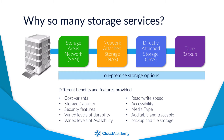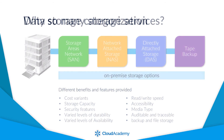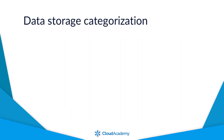Understanding which AWS storage service can provide these features and more is critical to being able to select the most appropriate service, allowing you to implement an effective and efficient solution. Data storage can be categorized between block, file and object storage. So what's the difference between these in AWS?